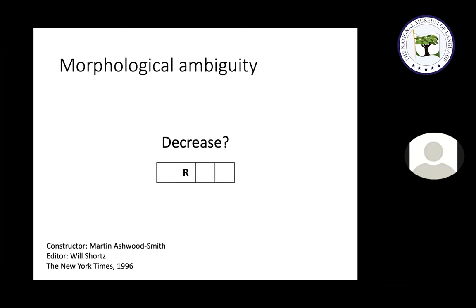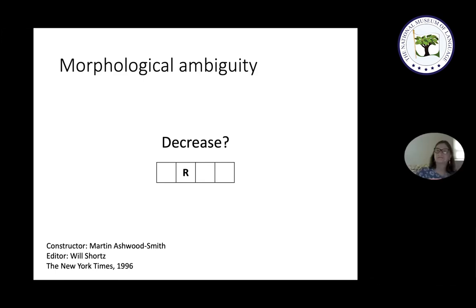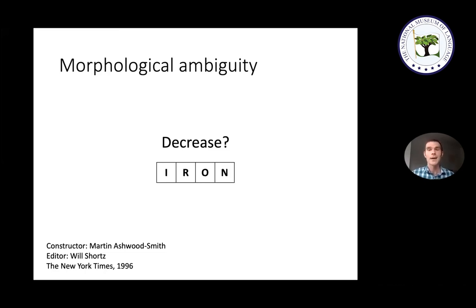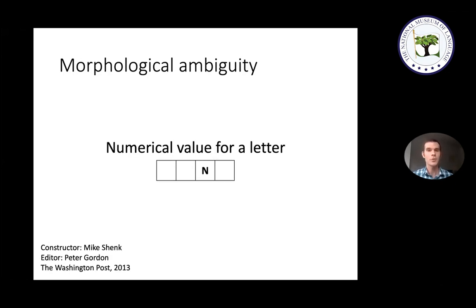So far all the ambiguities have involved a single word with multiple possible meanings. But there's a deeper type where the ambiguity is about identifying what the relevant linguistic units in the clue actually are. One classic example is the clue 'decrease,' which would clue a four-letter answer. Normally we interpret 'decrease' as a single unit, but to answer correctly you have to realize it could be broken into a prefix and a stem: 'd' plus 'crease.' Interpreted that way, it means 'to remove creases from,' giving the answer IRON, as in to iron clothes.